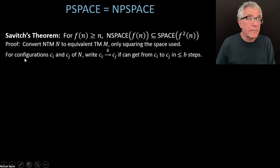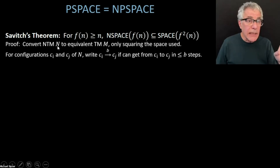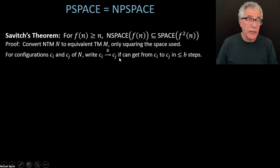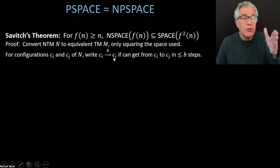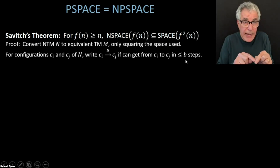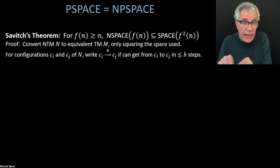We introduce notation very similar to the ladder problem. We take two configurations of the non-deterministic machine, C_i and C_j, and ask: can I get from C_i to C_j in at most B steps? This is analogous to the ladder notation — instead of asking whether we can get from one word to another via a ladder, we're asking whether the Turing machine can go from one configuration to another within B steps.